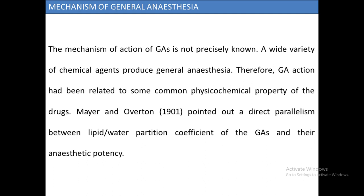The mechanism of general anesthesia is not precisely known at the molecular basis. A wide variety of chemical agents can produce general anesthesia, so we look at their action on neurotransmission and different receptors to get a basic idea of how anesthetic agents work in the body.